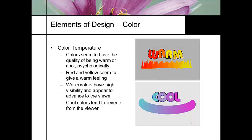Color temperature is also very important — we talked about color temperatures earlier in the semester in relationship to lights, but now color temperature is in relationship to mood. Colors have the quality of being warm or cool. Red and yellow give that warm feeling, and those warm colors give high visibility and appear to advance towards you — it feels like they're coming at you. Whereas cooler colors recede from the viewer.